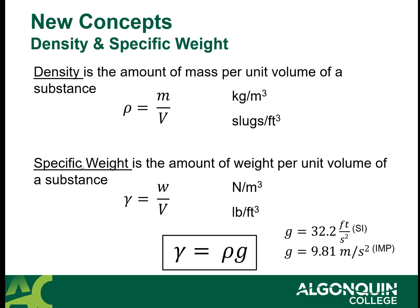Another concept is specific weight, which is the amount of weight per unit volume - that's weight, not mass, per unit volume of a substance. Gamma is defined to be the weight over the volume. It can be newtons per meter cubed or pounds per foot cubed.